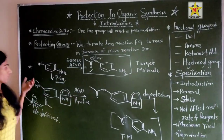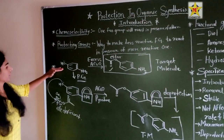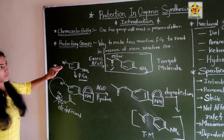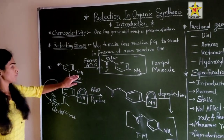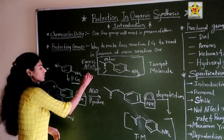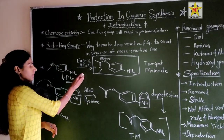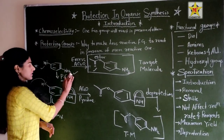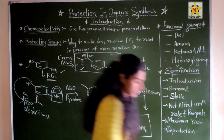In summary, we reacted the less reactive functional group (OH) in the presence of the more reactive one (NH₂). NH₂ is more reactive than OH, but here OH reacts — not NH₂ — because NH₂ was protected.